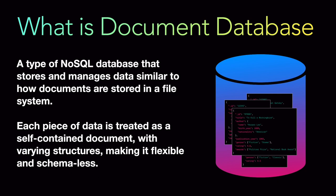Document databases are particularly well suited for storing and querying semi-structured or unstructured data where the data's format might evolve over time or vary between different records. Unlike relational databases where you have to create columns that might end up with null values for certain rows, document databases are schema-less, so the format can change depending on the varying structure of the data.